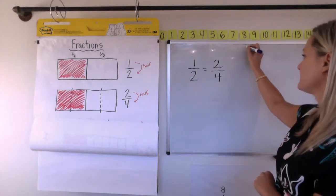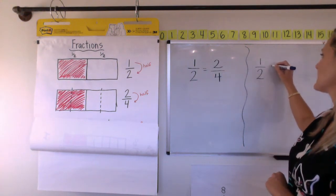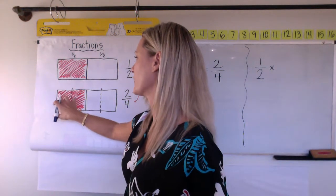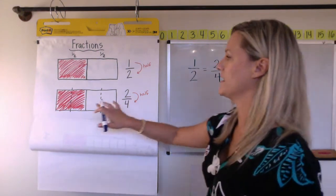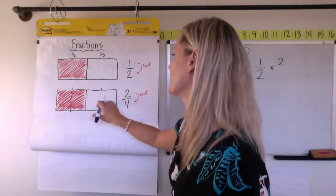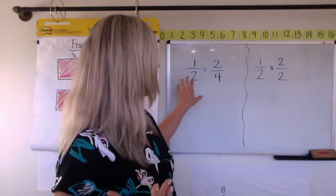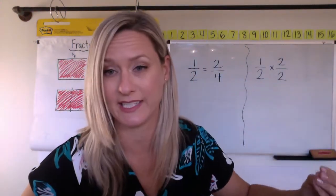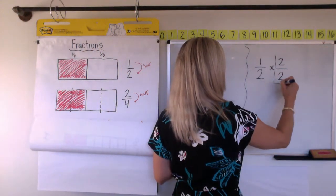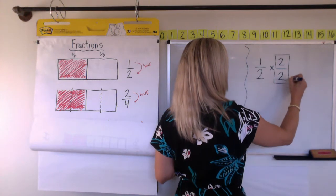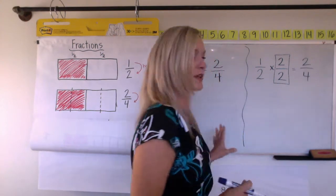So we could say one half times one piece was broken into two and two pieces were broken into two. So we could say that and that will actually generate an equivalent fraction for us. So we can multiply the one half by two halves and we'd get two fourths.